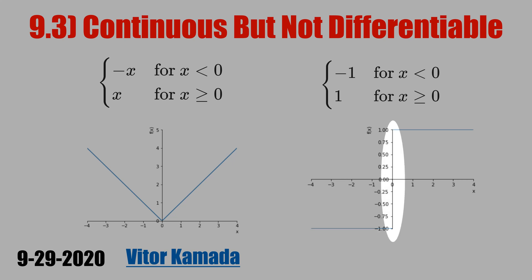Note that the derivative is not defined at point zero. The left limit and the right limit, they are different. The left limit is minus one, and the right limit is one.